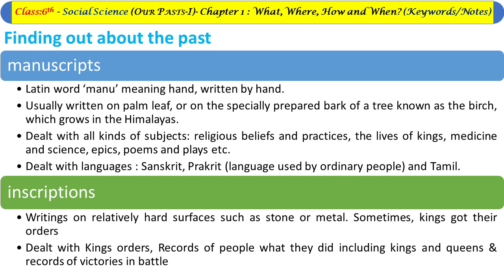The fifth topic is finding out about the past. The sources are manuscripts, inscriptions, and archaeology. Manuscripts, from the Latin word 'manu' meaning hand, were written by hand — usually on palm leaf or on the specially prepared bark of a birch tree, which grows in the Himalayas. They dealt with subjects like religious beliefs and practices, the lives of kings, medicines, science, epics, poems, plays, etc., and were written in languages like Sanskrit and Prakrit — Prakrit being used by ordinary people.